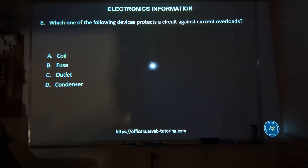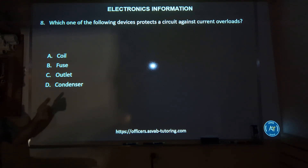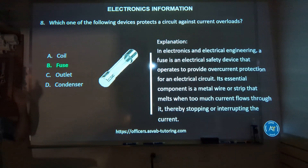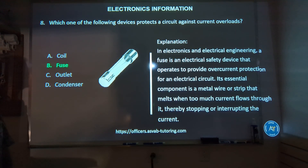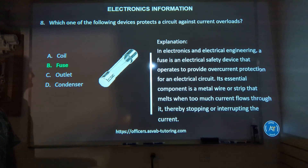Number eight: which one of the following devices protects a circuit against current overloads — a coil, a fuse, an outlet, or a condenser? The answer is B, a fuse. When you blow a fuse, there's too much energy going through, and that's why it blows — to protect the rest of the electronics.